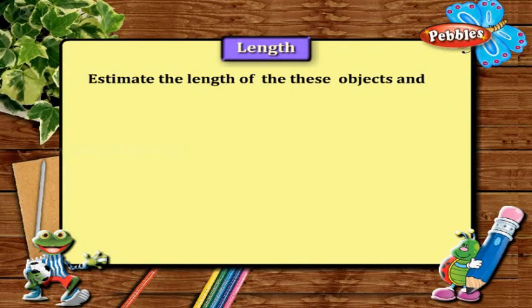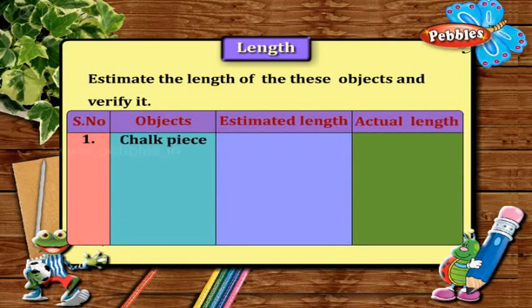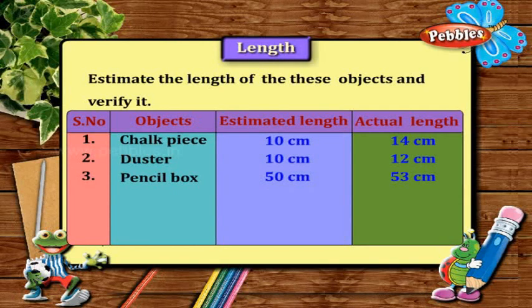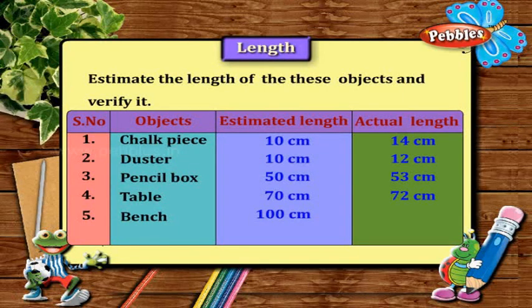Estimate the length of these objects, then verify it. Chalk piece: estimated length is 10 cm, actual length is 14 cm. Duster: estimated length 10 cm, actual length 12 cm. Pencil box: estimated length 50 cm, actual length 53 cm. Bench: estimated length 100 cm.